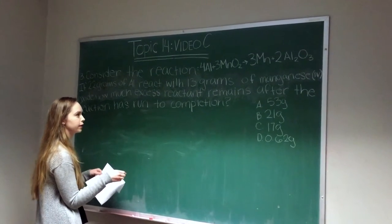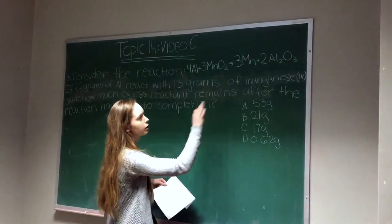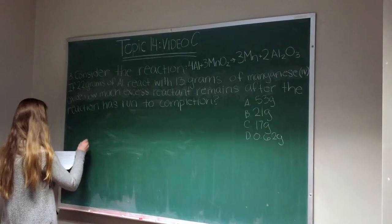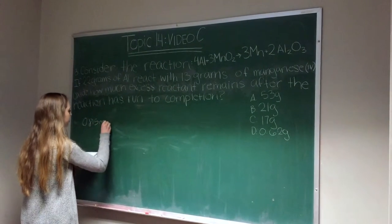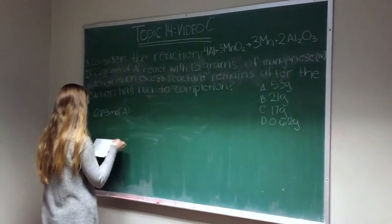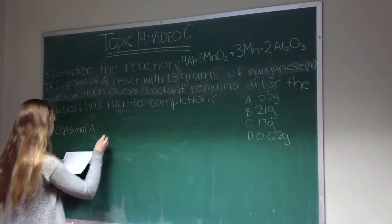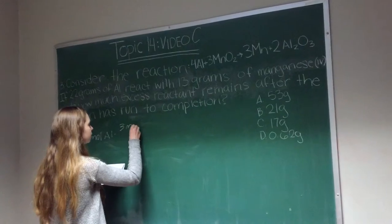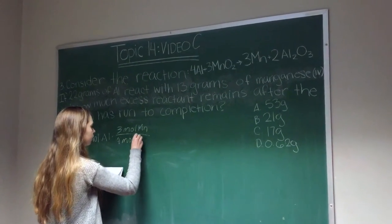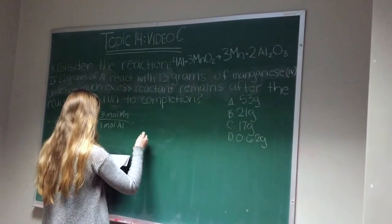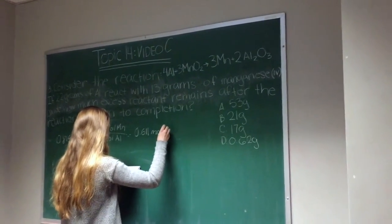Now we're going to use the moles we previously calculated to figure out how many moles we have of the product — you can choose either manganese or aluminum oxide. Here I'm going to take the 0.815 moles of aluminum and multiply by the manganese to aluminum ratio: 3 moles of manganese divided by 4 moles of aluminum, which gives us 0.611 moles of manganese.